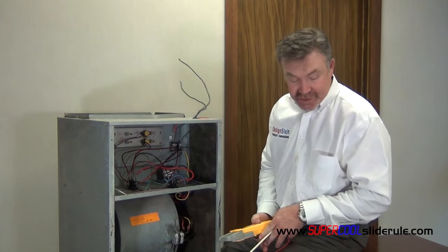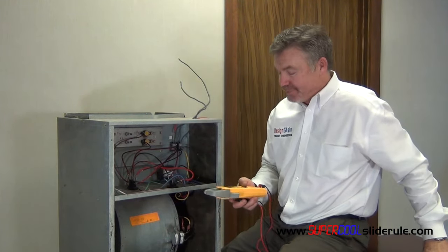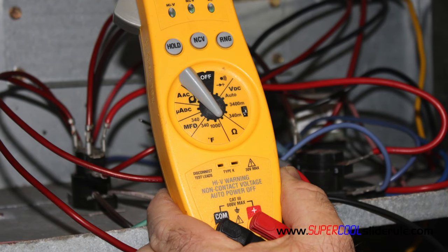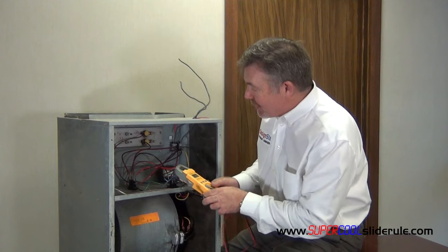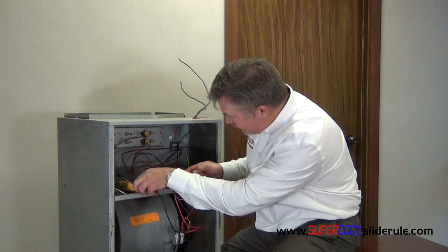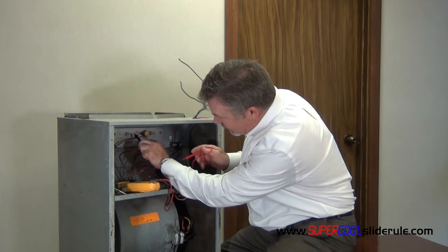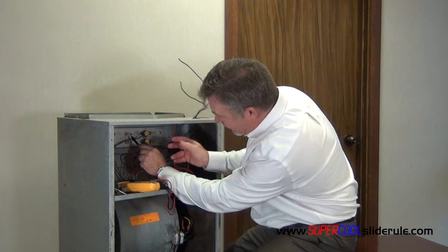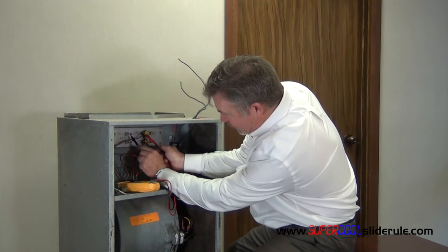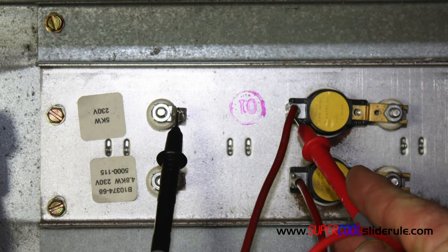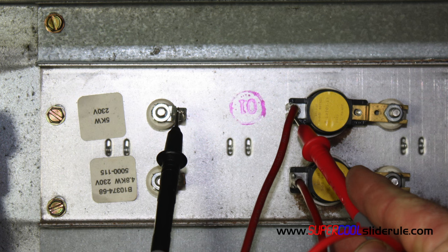Once this is disconnected, take your tester, set it to ohms resistance. Now it's important that we check on, we're going to check on this side where we completely disconnected the wire. On the opposite side, we're going to check where the wire terminates the limit switch.